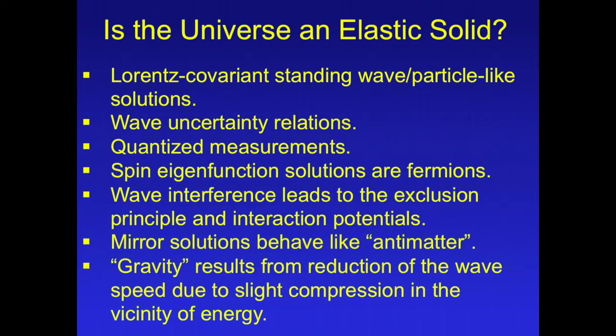These solutions would obey the wave uncertainty relations, similar to the Heisenberg uncertainty relations. Measurements would be quantized, because matter could only go from one standing wave state to another. Any spin eigenfunction solutions would be fermions. Wave interference would lead to the exclusion principle and also to the interaction potentials. Mirror image solutions would behave like antimatter. And gravity would result from the reduction of wave speed due to slight compression in the vicinity of energy.